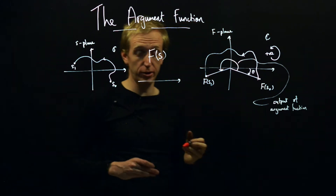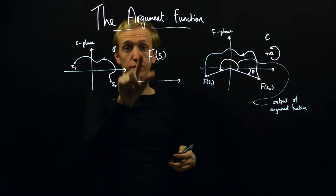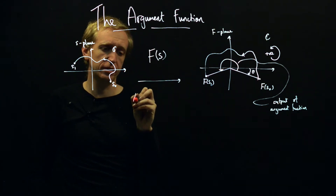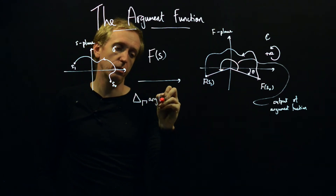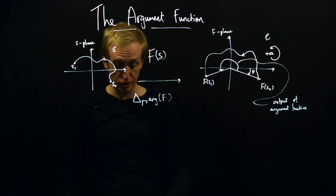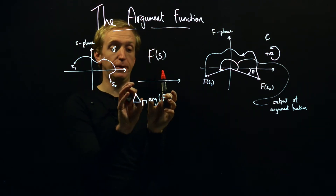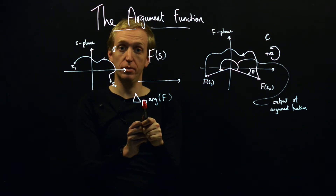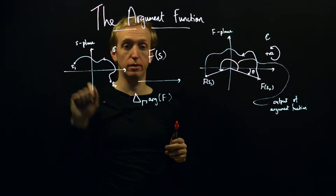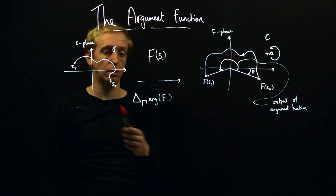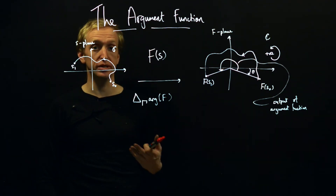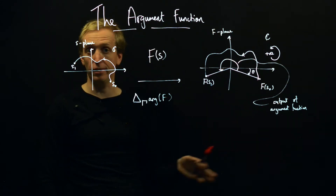The inputs to the argument function are both the input curve and the function you're looking at itself. The notation used in your notes is delta gamma arg of F, where this function takes as input a complex function F and a curve gamma, and outputs the amount that the argument of the function has changed as you move along the curve. We're going to use this to derive what's called the argument principle, which underpins all sorts of other results.